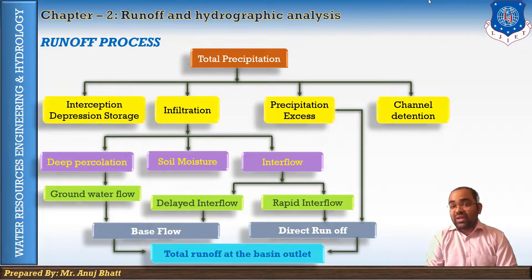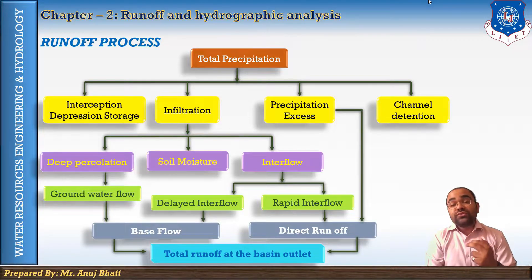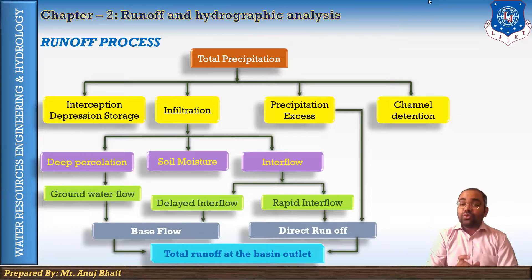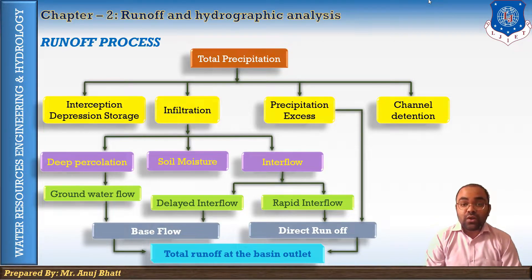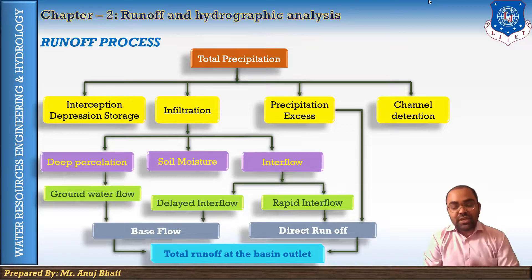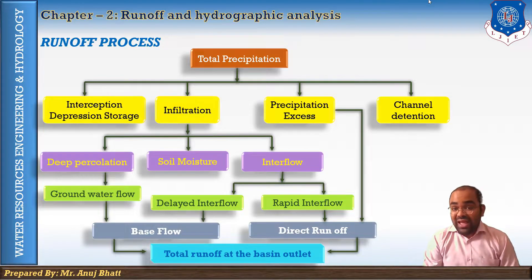This water flows over the land and then joins the streams, rivers, or oceans. This overland flow is generally known as surface runoff. The water which percolates without joining the water table and then flows below the ground surface and joins the stream or river is known as subsurface flow, and that is considered part of surface runoff or excessive precipitation.